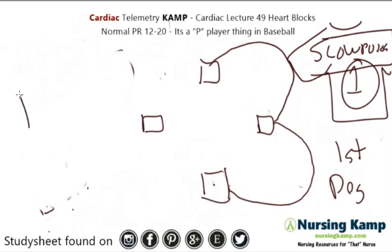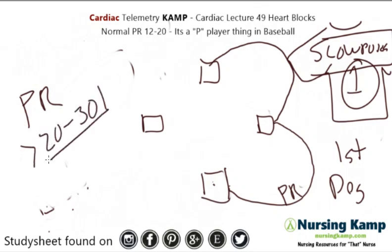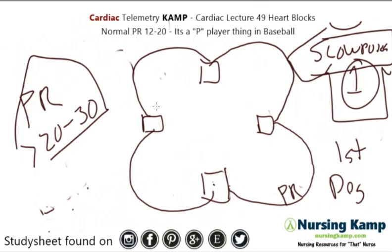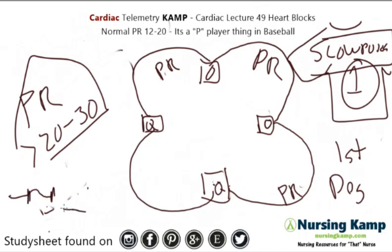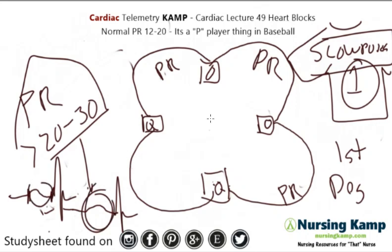His PR — this journey — is long. It's greater than 20 to 30. But the interesting thing is he does touch all the bases. So the PR is long, but he touches all the bases, which means there is a contraction of the QRS. The PR interval — the P to the R — is long, greater than 20 to 30, but there is a QRS after every P wave. It's just very long. That is a first degree heart block.